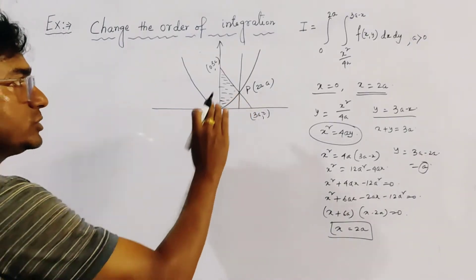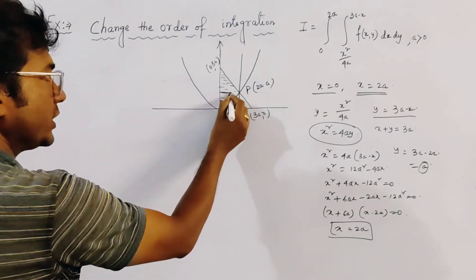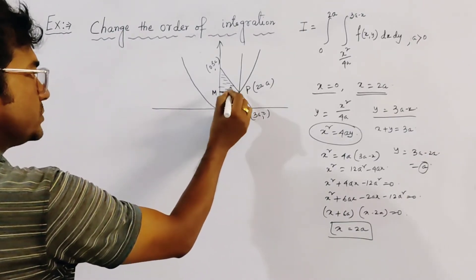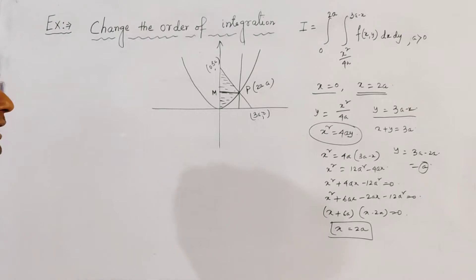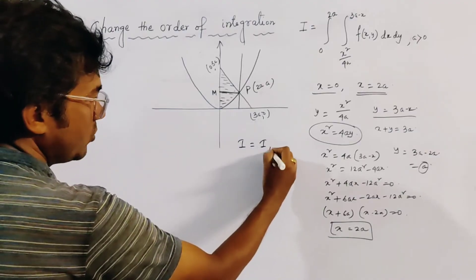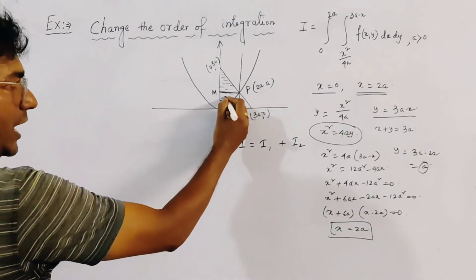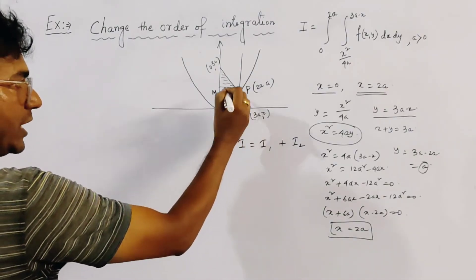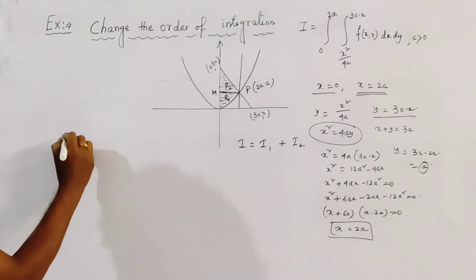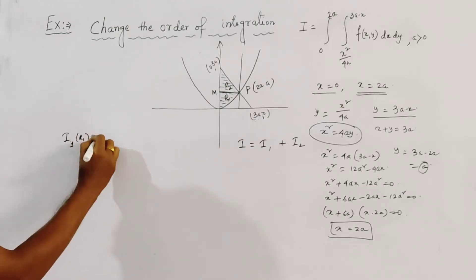Now to change the order of integration, we divide this region into two parts. We draw a line PM perpendicular to the y-axis and write the integration I in two parts: the first part is I1 over region R1 and the second part is I2 over region R2. We first calculate I1 over R1.